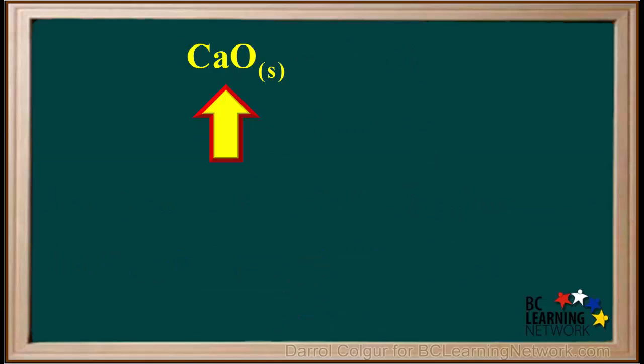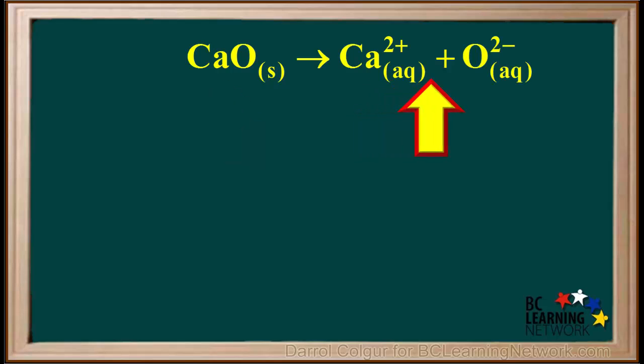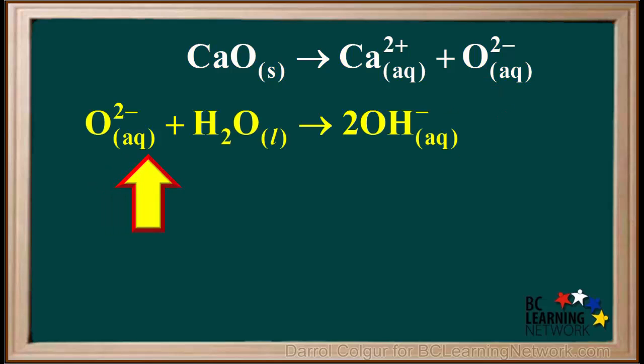Now we'll have a look at the equations for calcium oxide. This can represent oxides of all the metals in group 2, the alkaline earth metals. When calcium oxide dissolves in water, it dissociates into Ca2+ and O2-. The O2- reacts with water to form 2OH- ions.